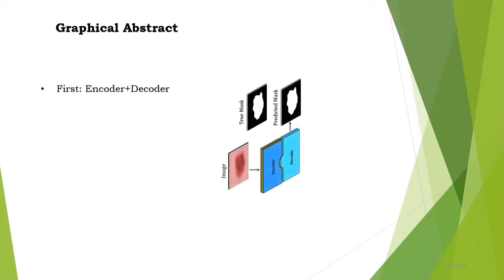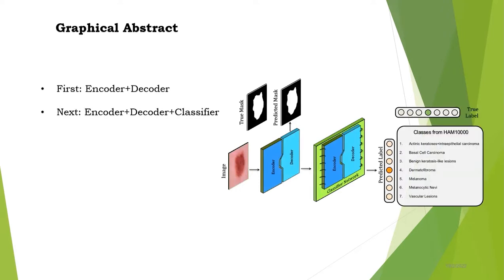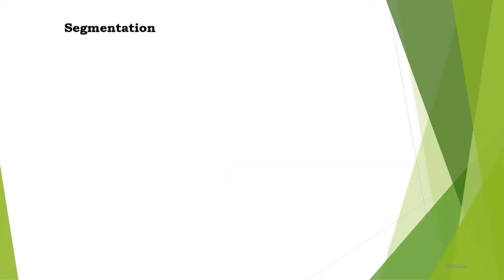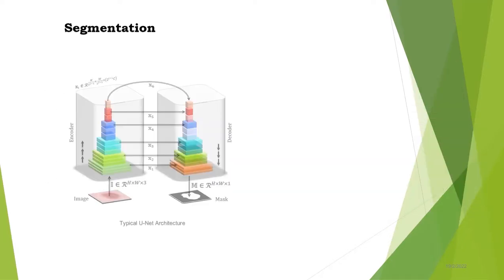As for the graphical abstract, we take the encoder and decoder for the segmentation network to predict the mask, combine them with the classification network to predict the classification of the cancer lesions, keep the entire network learnable by classification, and optimize each stage accordingly.